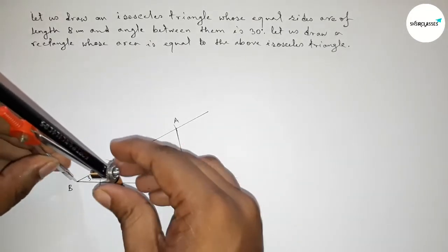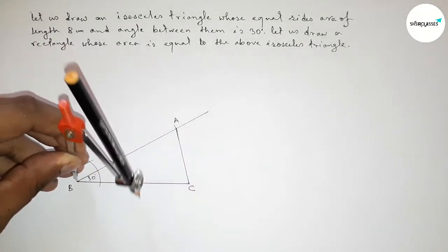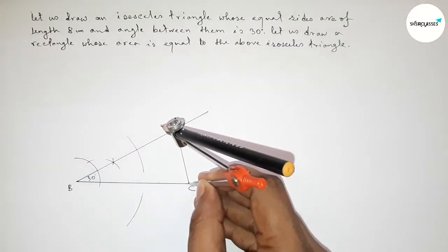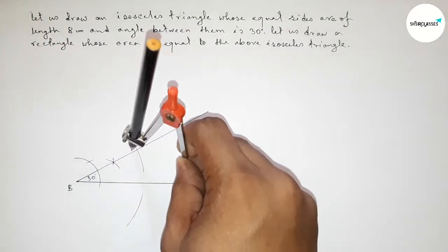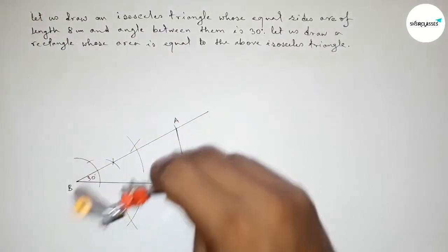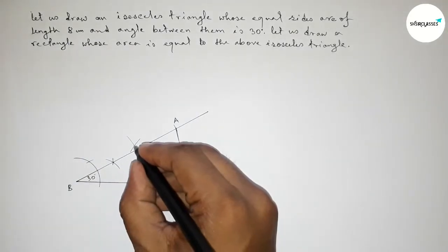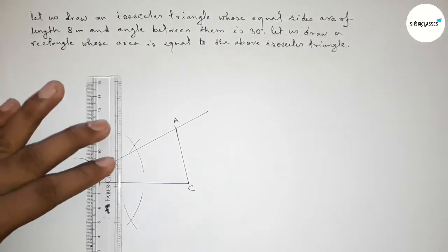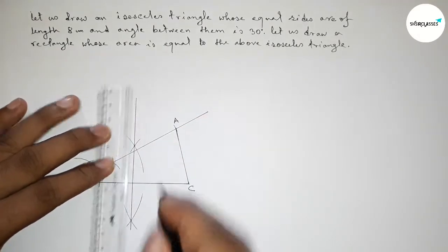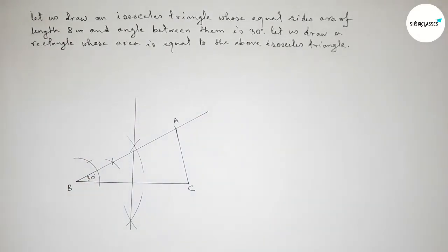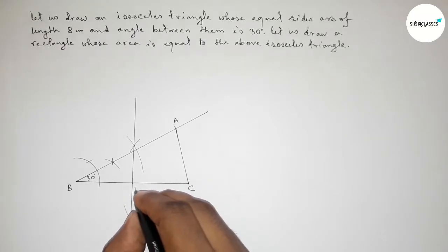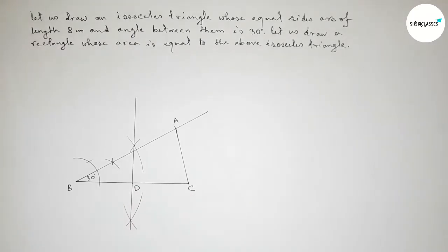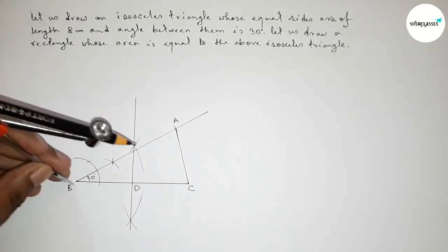Next we have to bisect the line BC. Taking greater than half of BC and drawing an arc this way, then putting the compass here with the same length and cutting here. Both curves intersect at two points. Joining this line and taking point D.